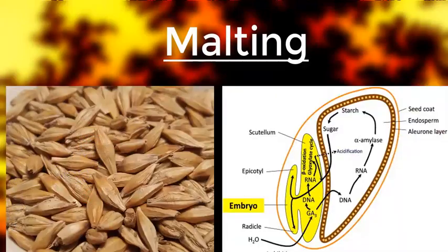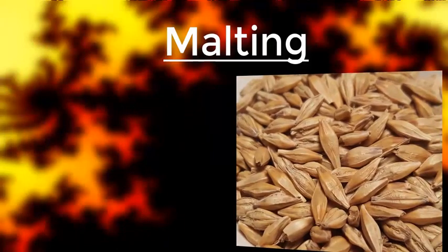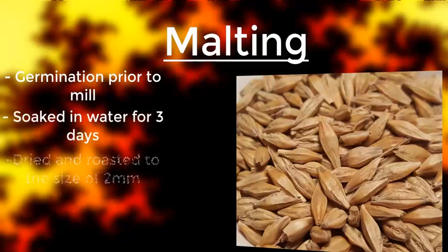First, we're starting with the malting process. On screen you see a diagram of a barley seed, which is what you start off with — but not just one seed, you have roughly thousands upon thousands of these seeds. Looking at this diagram you can see there are enzymes; it says alpha amylase but there is also beta amylase in there as well. The barley seed goes through the process of germination prior to going into the mill. It is soaked in water for roughly three days, then dried and roasted to the point where it is no smaller than 2 mm, retaining just enough moisture and proteins.